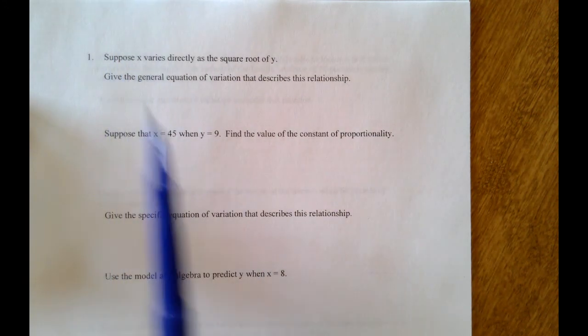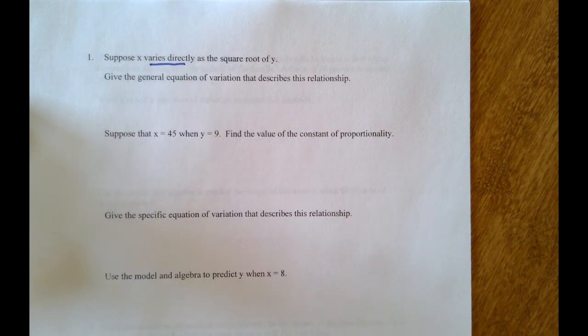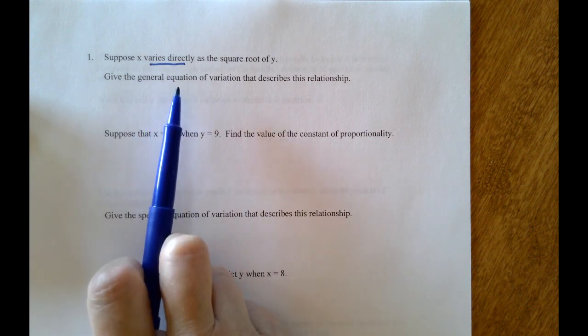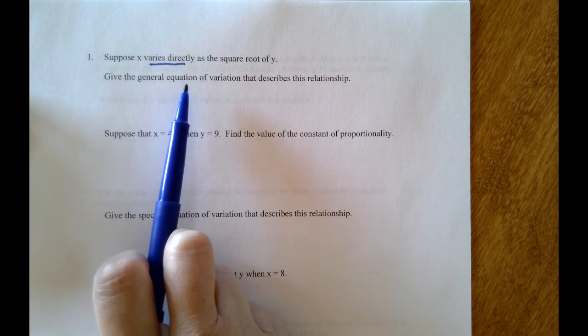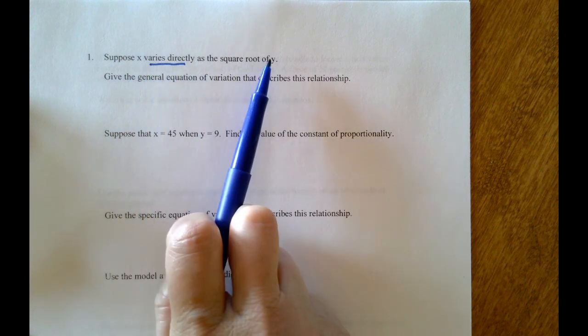To use this, let's go grab an example. Let's say that someone tells you that x varies directly as the square root of y. We have to be really careful readers with these. The general equation of variation for this relationship will be formed by reading the statement just like you would in English from left to right.